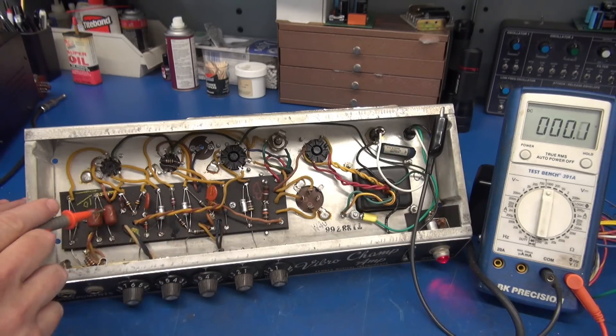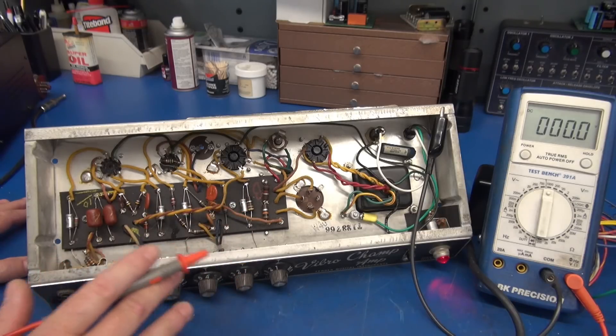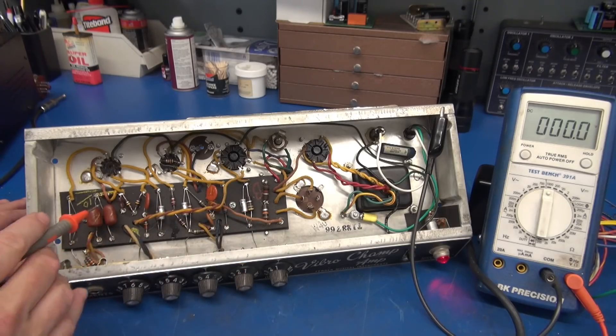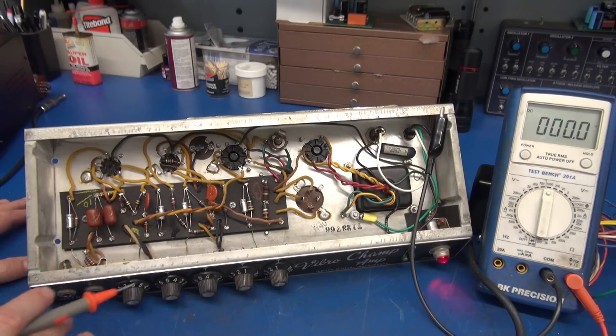So yep, these guys are leaking DC and that's what's screwing up the volume and tone controls on this amp. So what I'm going to do is simply replace these two first. You know I normally change them all but I want to show you guys the before and after, just changing out these two caps, bring this amp back to life.